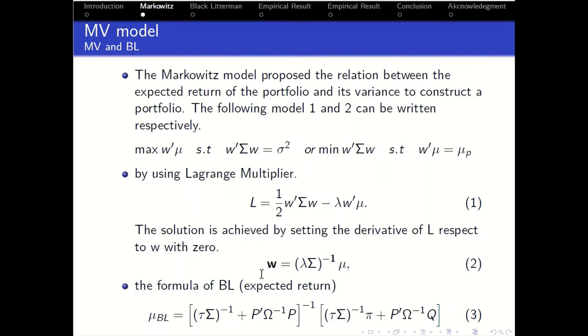We get the optimal weight in this equation. In equation two, we get the output of the weight by using this input mean. And the Black Litterman, the core of the Black Litterman model is we replace this mean in Markowitz with the new target mu BL in equation three.